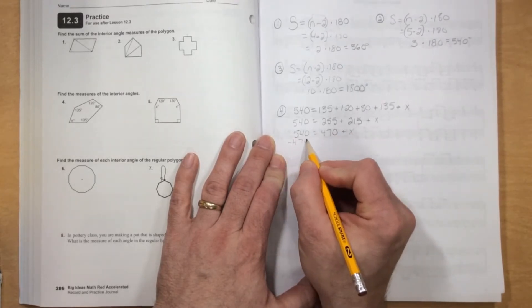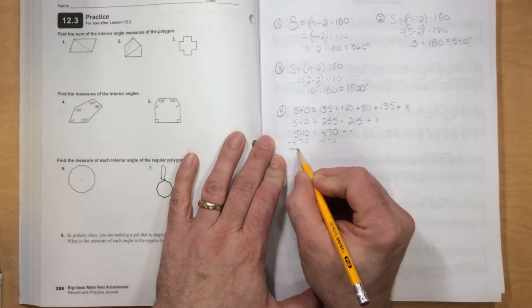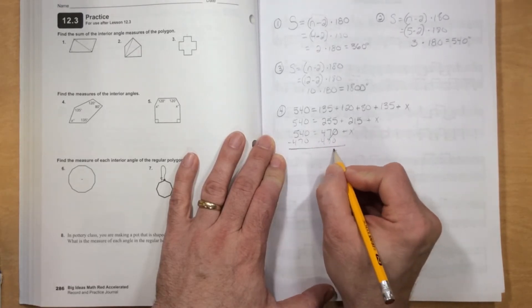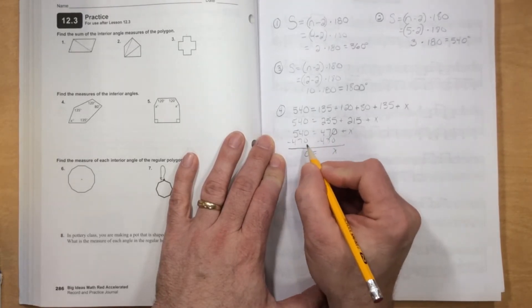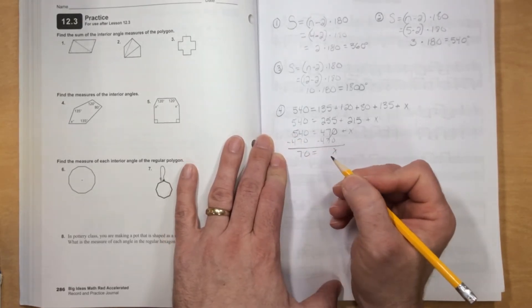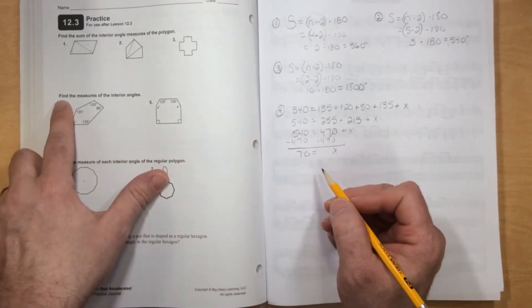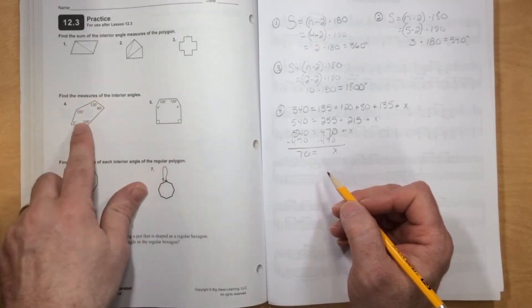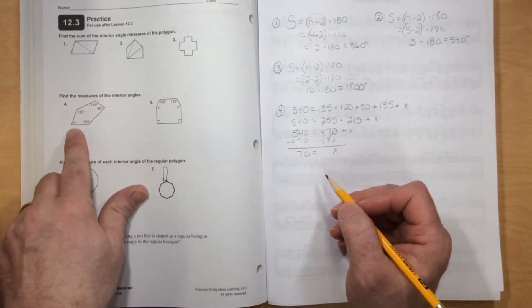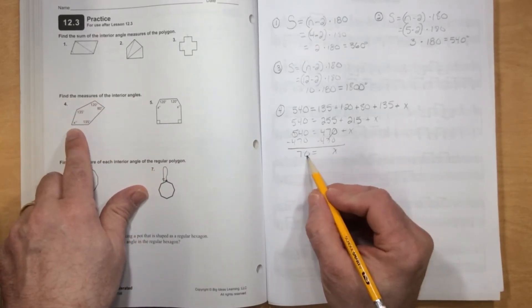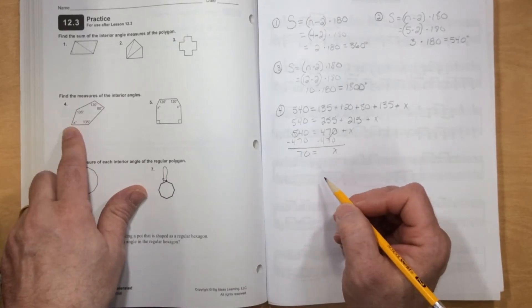And now subtract 470 from both sides and get X equals 70 degrees. So X equals 70. That's the missing angle.